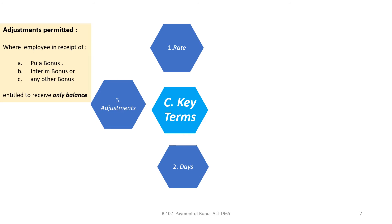Employers have the option to set off amounts paid as puja bonus, interim bonus, or any other bonuses while making payment of the final statutory bonus, unless when such payment was made there was an agreement between the employer and the employee that it shall not be adjusted against the annual bonus. Meaning, it depends on the understanding between the two parties.